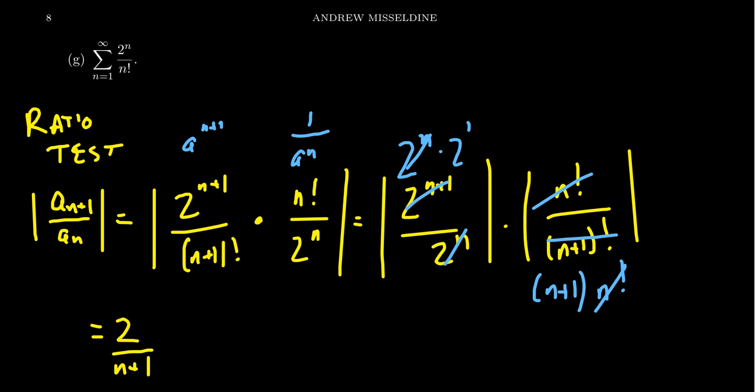So this is just the sequence a n plus 1 over a n. I dropped the absolute values because n will be positive here, so everything is positive in question. So now we want to take the limit here. We're taking the limit as n approaches infinity. So as n approaches infinity, we'll end up with something like 2 over infinity, which squashes down to 0.